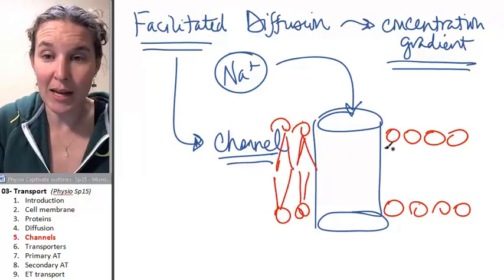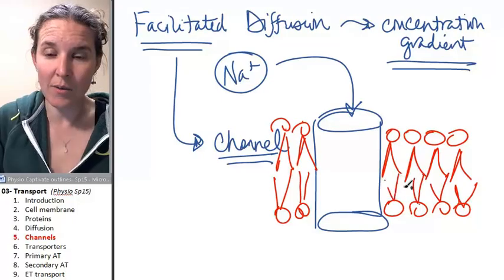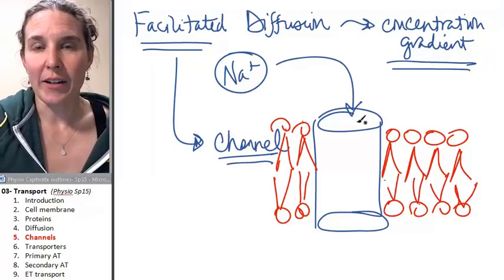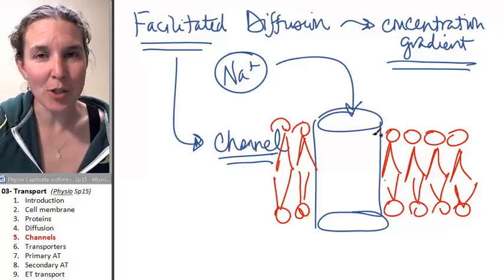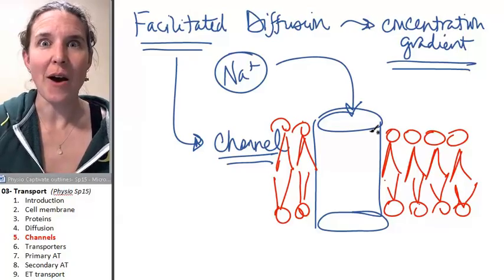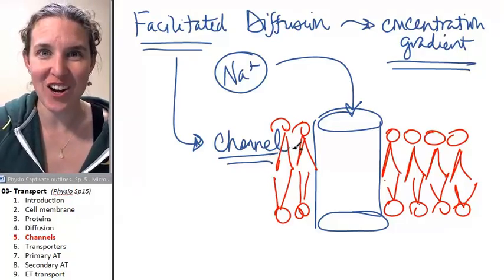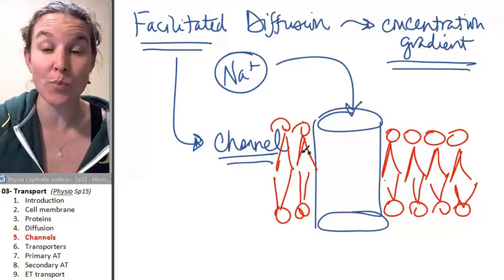There's my phospholipid bilayer. I can do it. There we go. So accurate. It's a protein. It's almost like a little gap junction that doesn't connect two cells. That would be a fantastic compare and contrast question, like compare and contrast gap junctions and channels.